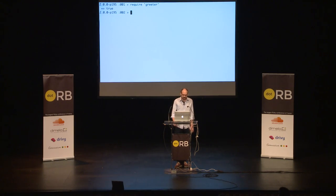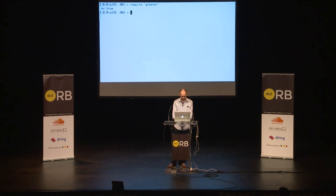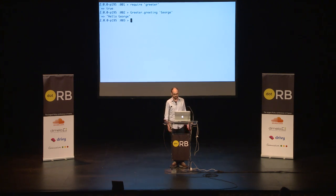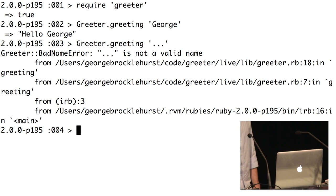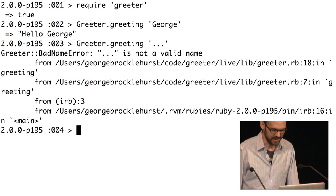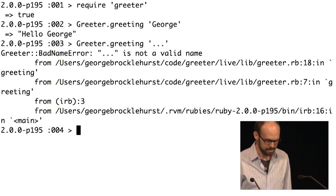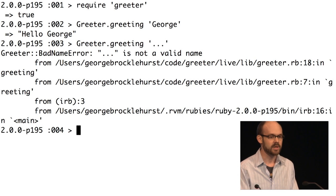So I've written a Ruby library called Greeter. It's very useful but very simple — it has one class called Greeter and one method called greeting. When I give it a name it returns a greeting for that name. If I give it something that doesn't look like a name, maybe some punctuation, it raises an exception and tells me that's not really a name. So we're going to wrap this in a command line interface.